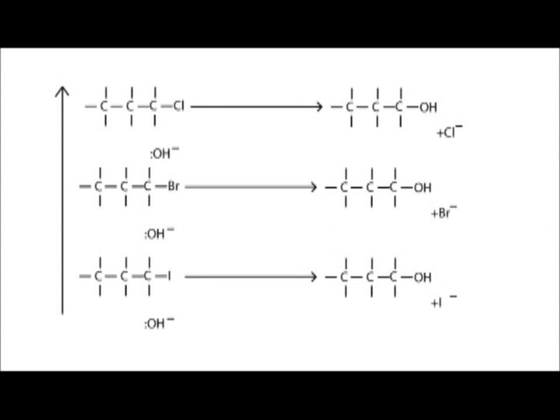Bond enthalpy increases up the halogens so fluorine has the highest bond enthalpy and iodine has a lower bond enthalpy. This means that the rate of hydrolysis, which is this reaction, decreases as you go down the halogens. So iodine hydrolyzes the fastest and chlorine hydrolyzes the slowest. Of course anything below iodine will react faster still.